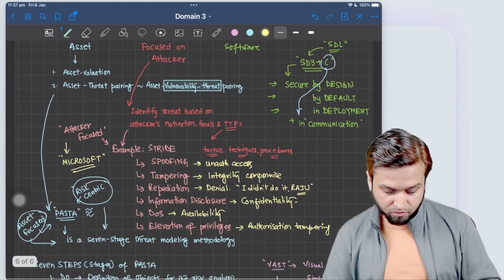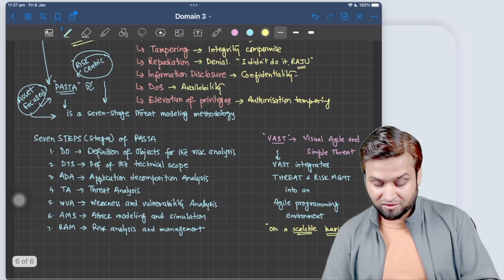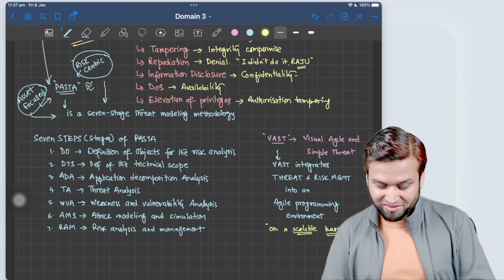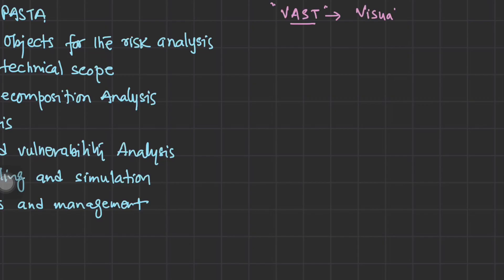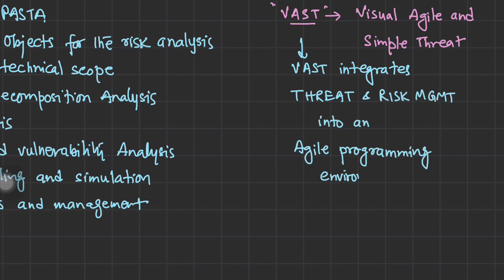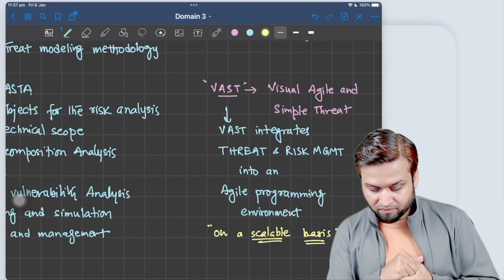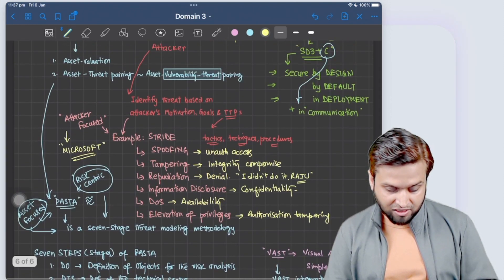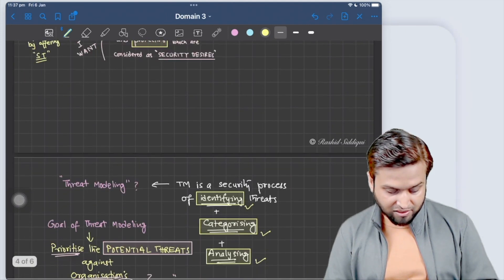Another model is VAST — Visual, Agile, and Simple Threat modeling — which integrates threat and risk management into an agile programming environment. We'll revisit VAST when discussing the software development domain. That's all for threat modeling, and as always thanks for watching — see you in the next video and best of luck for the CISSP exam.